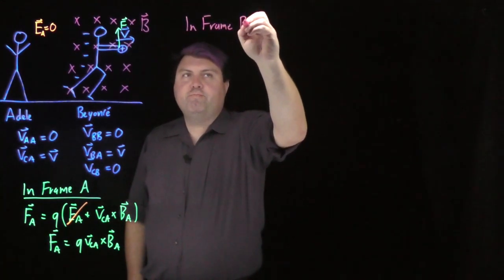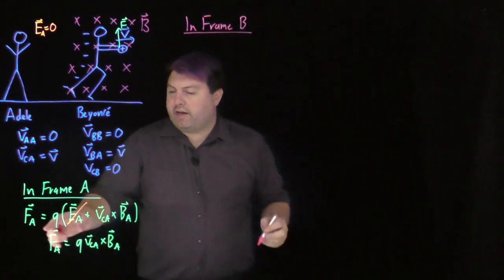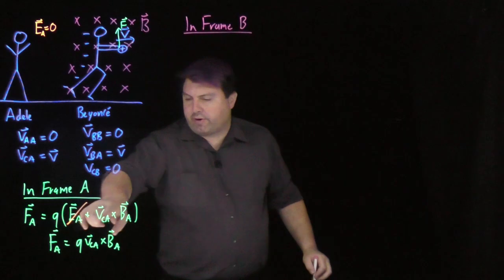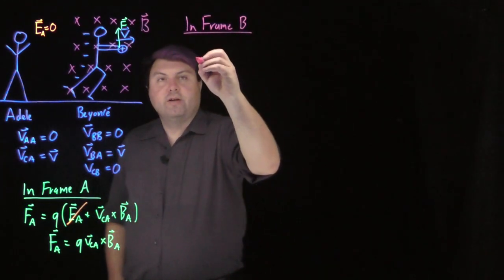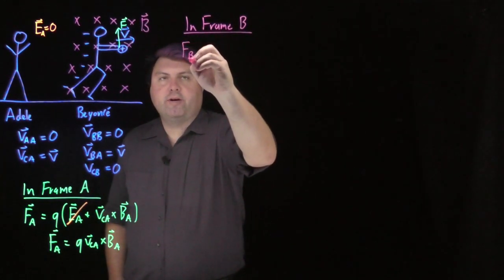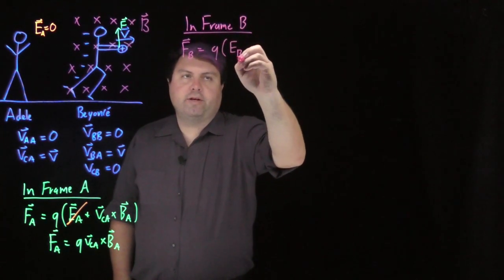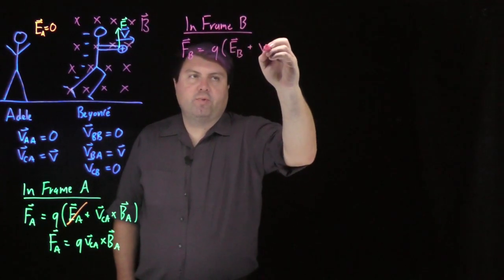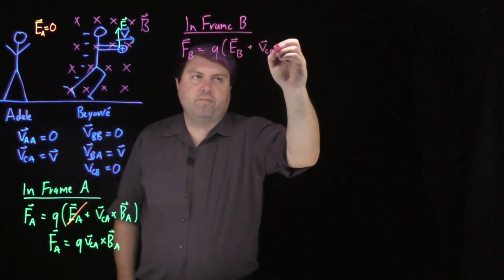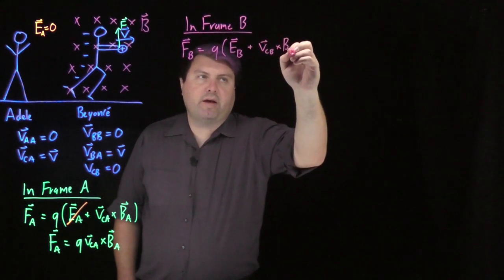In frame B, I can rewrite this equation just with the subscripts B. So I have the force in frame B is Q, the electric field in frame B plus the velocity of the charge in frame B crossed with the magnetic field in B.